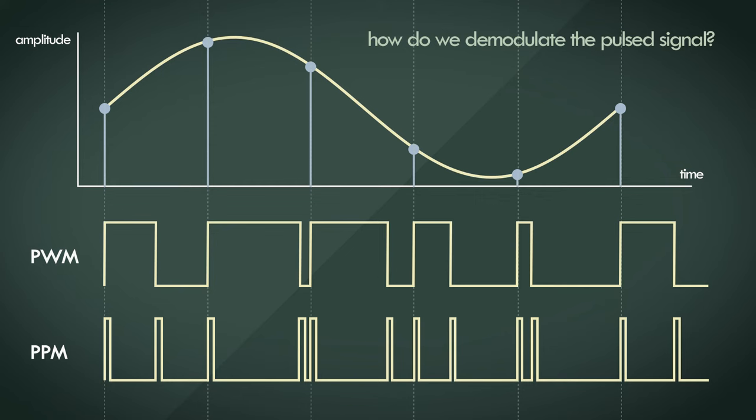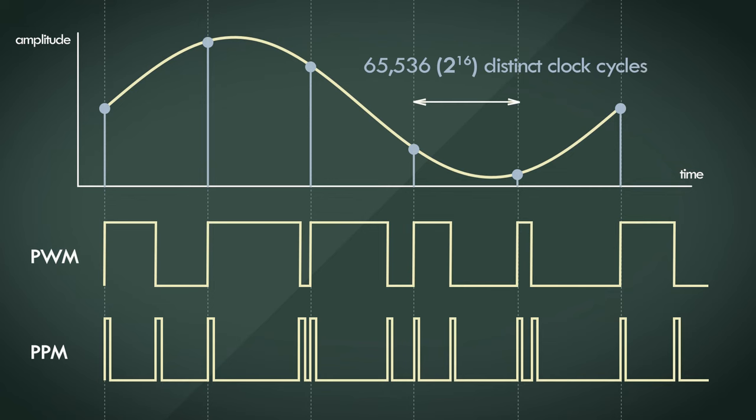All we have is relative width or relative position to determine the sample amplitude. We need a high enough resolution to represent the 16-bit sample amplitude correctly, and to represent it perfectly, we need 65,536 distinct clock cycles between each sampling interval. This is an incredibly inefficient way of encoding data, and the bandwidth required to transmit this encoded signal would be colossal.